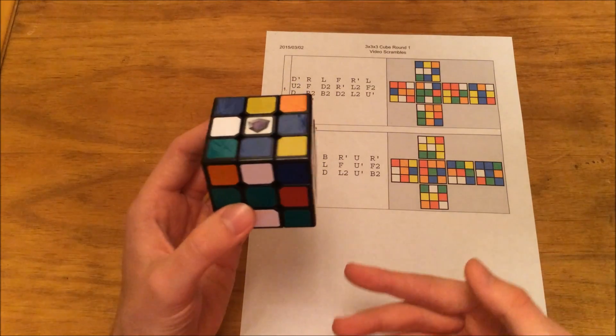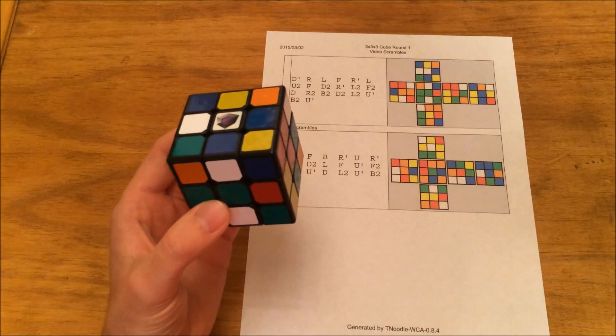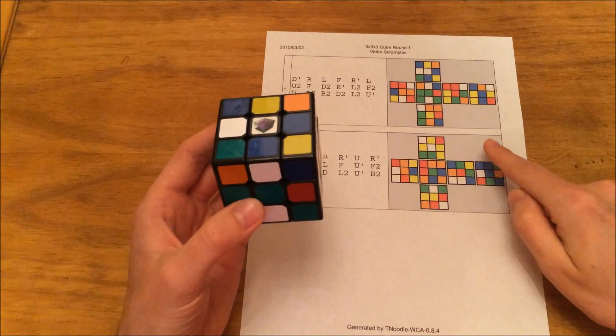So this is a correctly scrambled cube. If it doesn't match, you need to solve the cube and re-scramble it until it is correct.